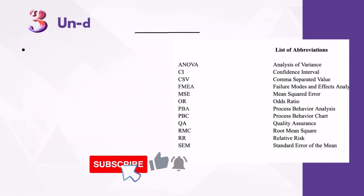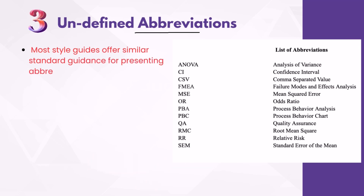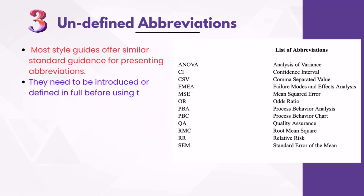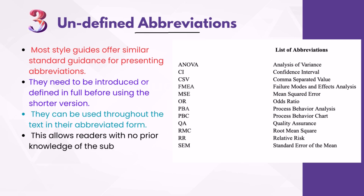3. Undefined Abbreviations. Most style guides offer similar standard guidance for presenting abbreviations. They need to be introduced or defined in full before using the shorter version. Thereafter, they can be used throughout the text in their abbreviated form. This allows readers with no prior knowledge of the subject matter to understand what you have documented.